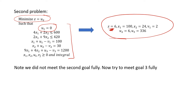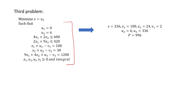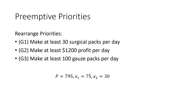Now that we know the best we can do with the second goal, we move on to the third. We know we can achieve it with a shortage of six, so we put that into our constraints: u1 equals zero and u2 equals six. Now we try to minimize the shortage of the third goal — the profit goal — and we get a solution. The best we can do is a shortage of 336 for our third goal, which is the profit goal. This gives us the best solution achievable with that order of priorities.